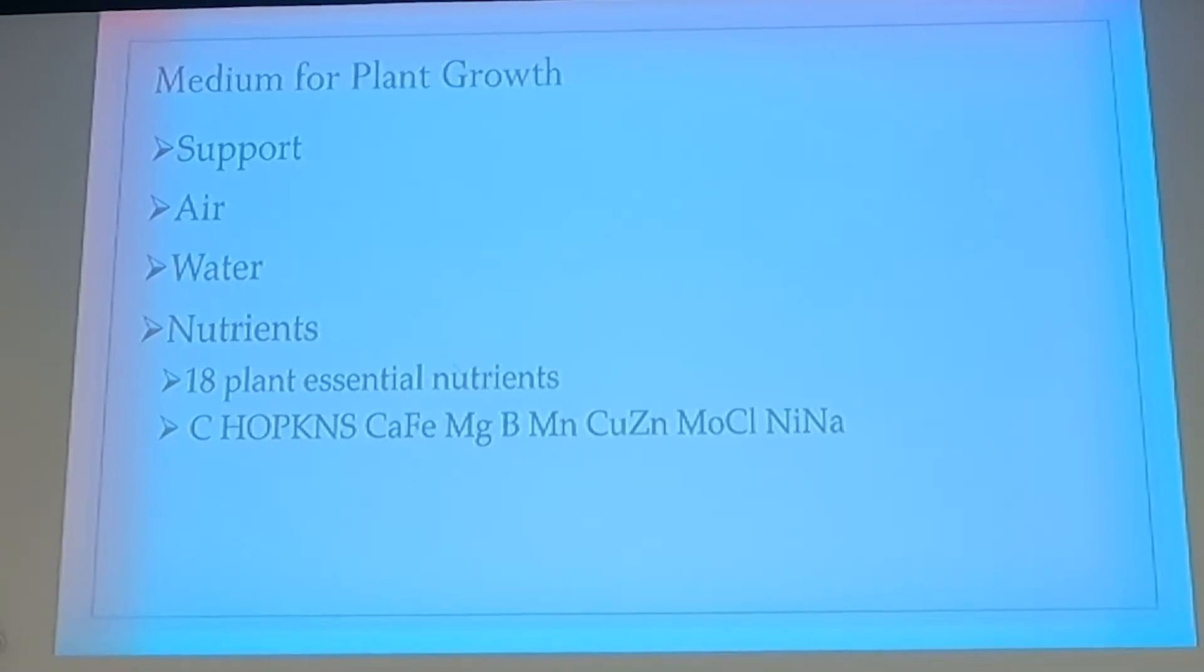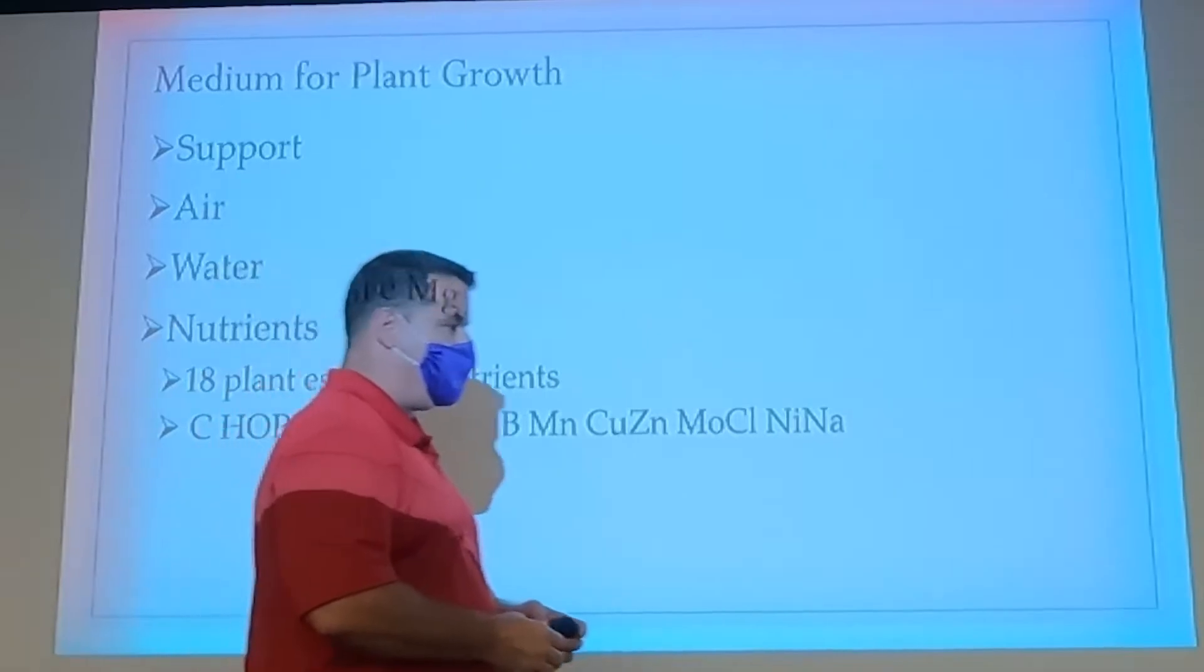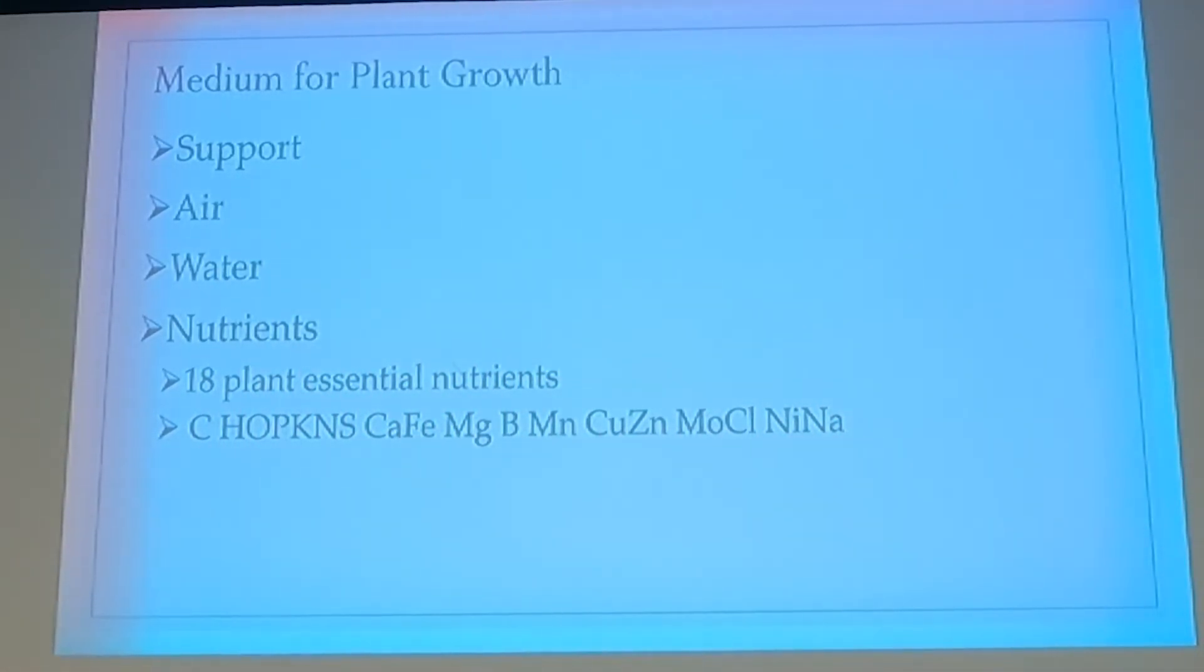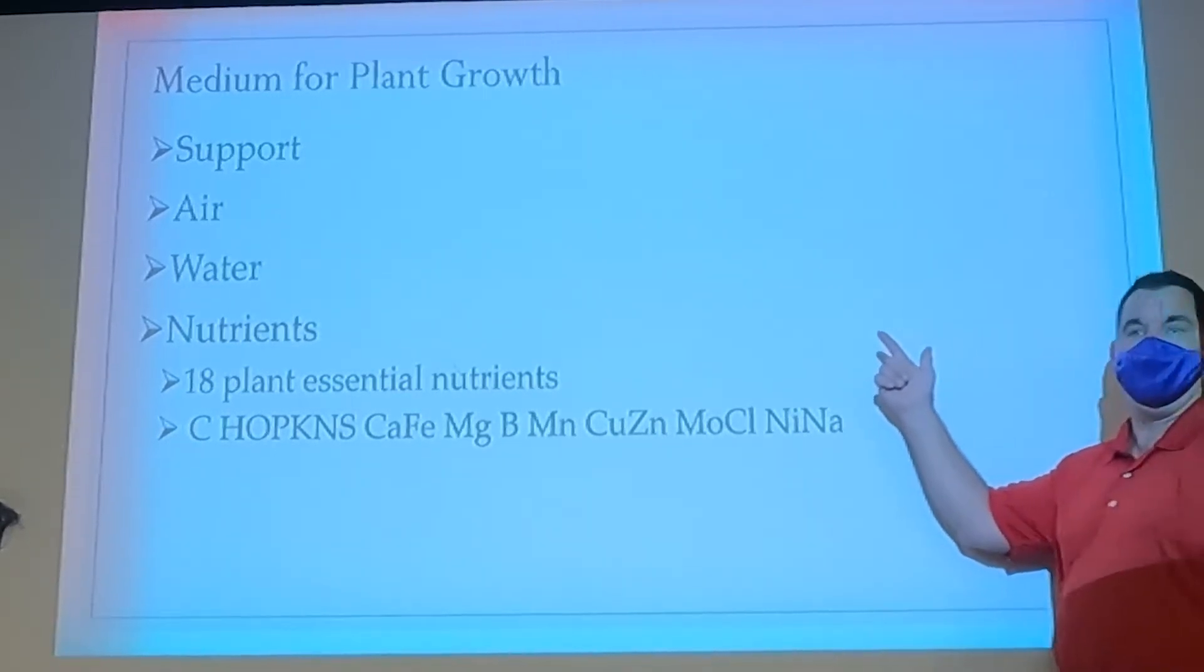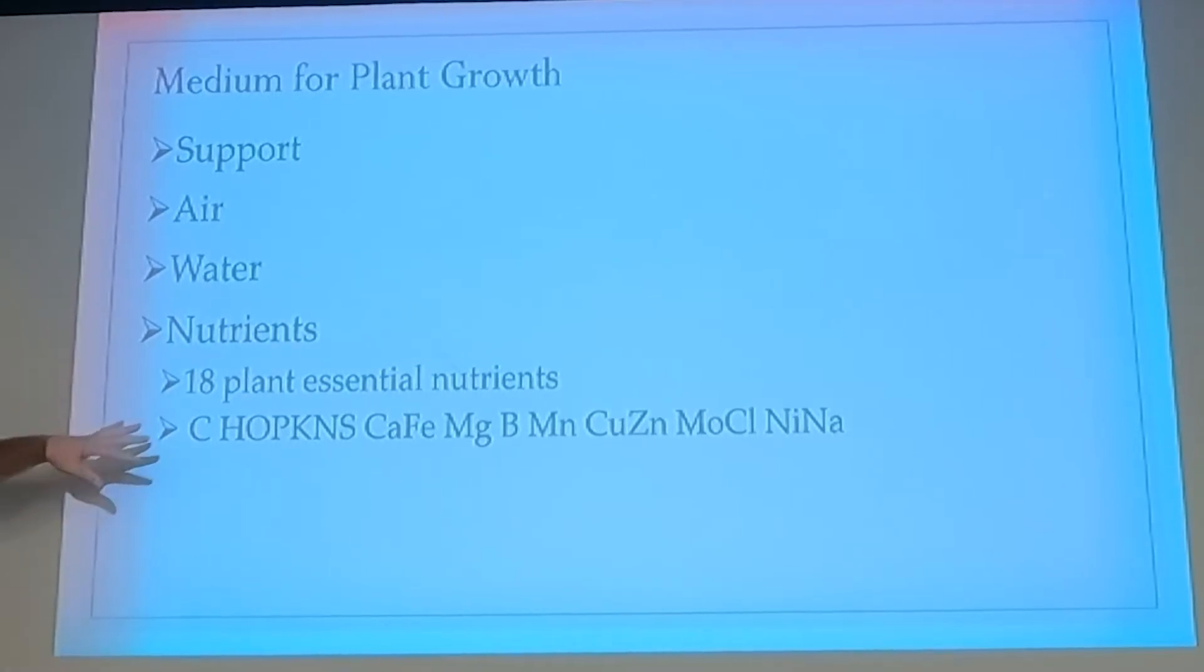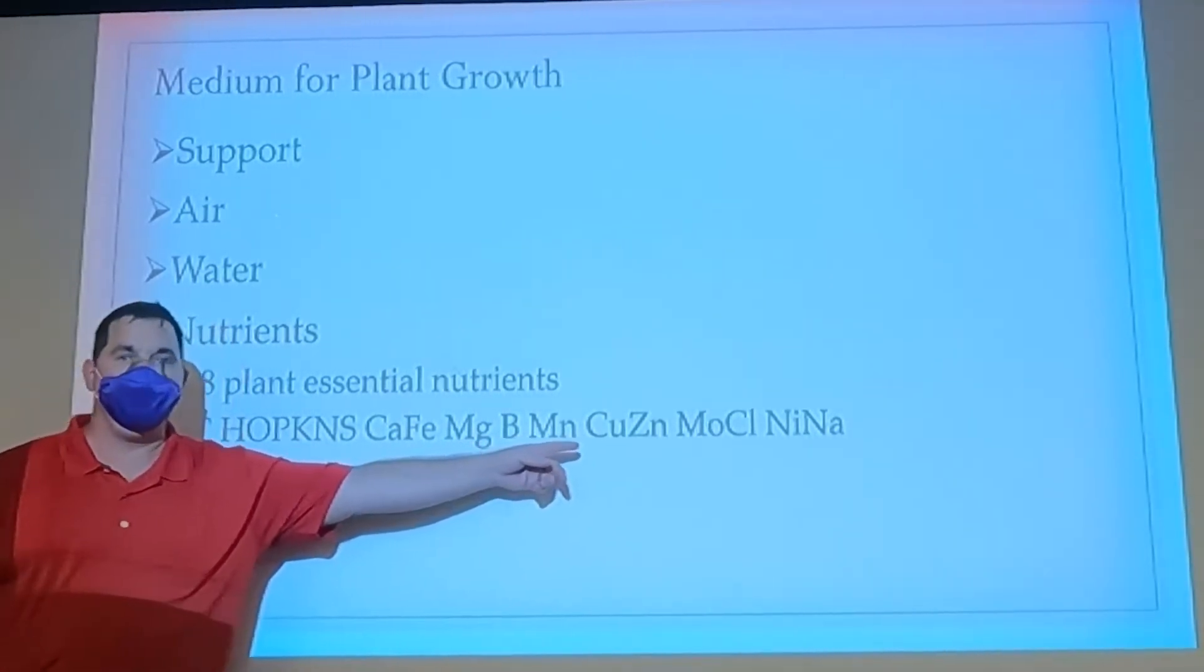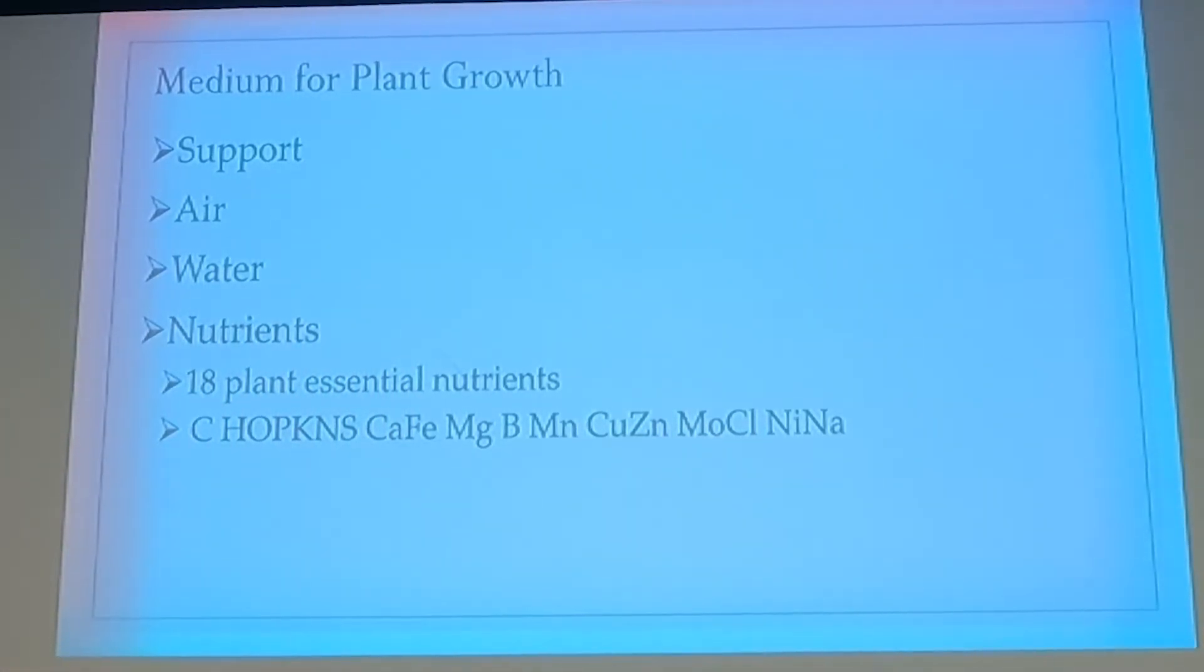So here we are as a medium for plant growth though, which is pretty much what we're here for. It's support. Anybody seen a tree blowing over after too much rain? Hurricanes come through, flood the soil, tree falls over. So if we don't have any soil, the trees need that for support. It supplies air, water, and nutrients. Going back to that pie chart, it supplies the air and the water on the other side of that ideal soil. And then in the mineral part are the nutrients. So there are 18 essential plant nutrients.